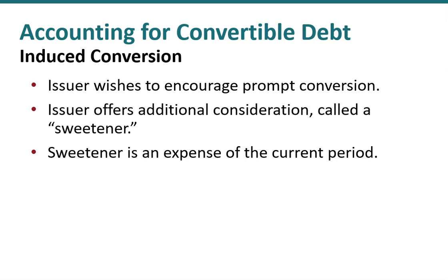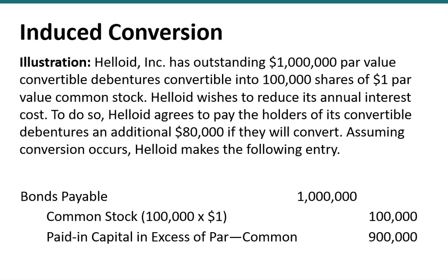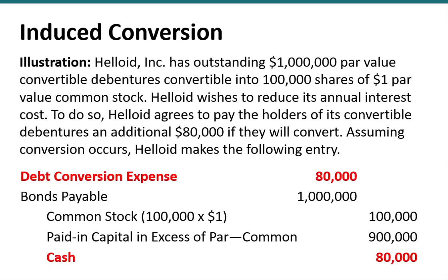Let's take a quick example. The Heloid Corporation has bonds outstanding, and normally, if the bonds were converted, we remove the bonds payable from the books along with any unamortized premium or discount and record common stock and additional paid-in capital. In order to induce our bondholders to convert today, though, we've offered to pay them an additional $80,000 in cash. That simply becomes a credit to cash for $80,000 and is recorded as a debt conversion expense in the current period.